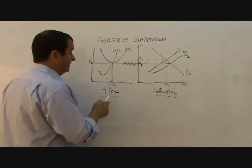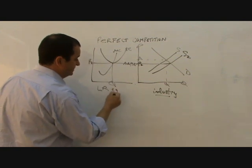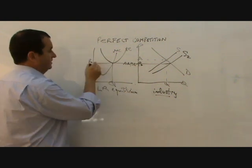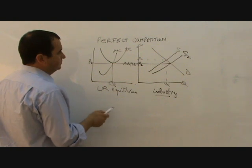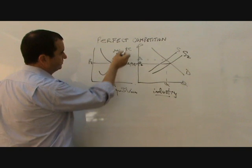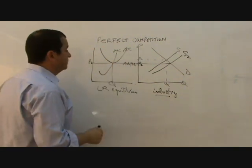not only is there no abnormal profits, this is now the long run equilibrium. Not only is there no abnormal profits, but also because we see that at the level of output, production is at the lowest possible point on the AC, that shows that there is productive efficiency.